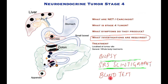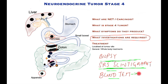Blood tests and at times urine tests are performed to find out whether the tumors are excreting hormones and to assess the level of these hormones circulating in the blood. Other tests such as conventional CT scans and MRI scans are also performed.